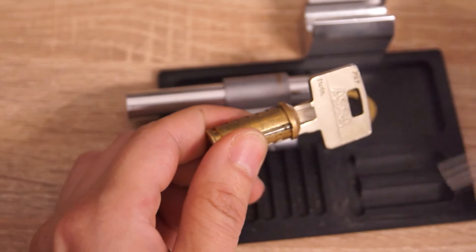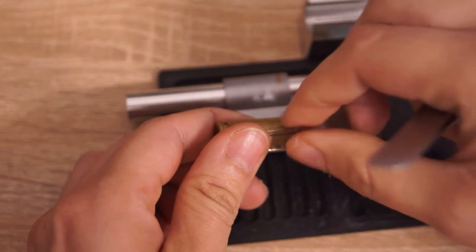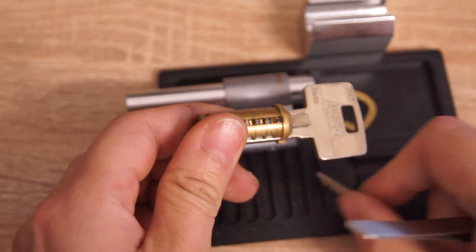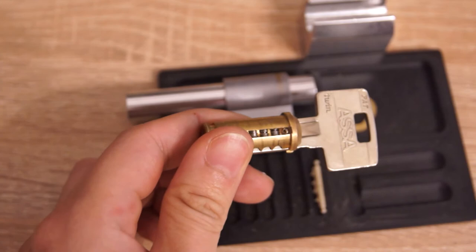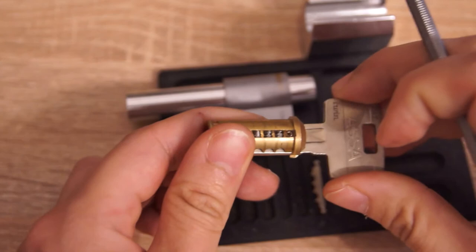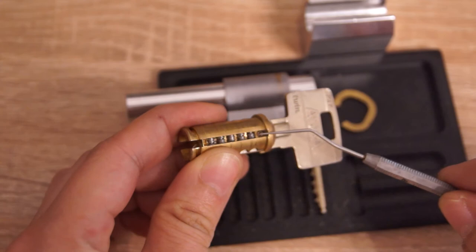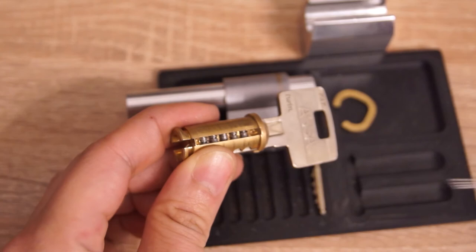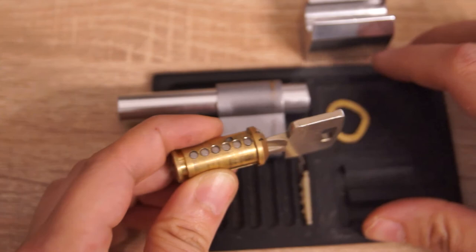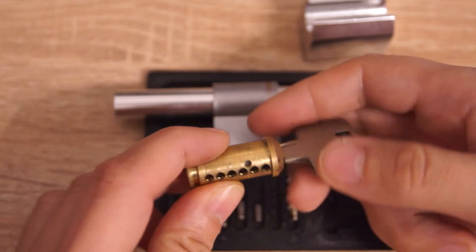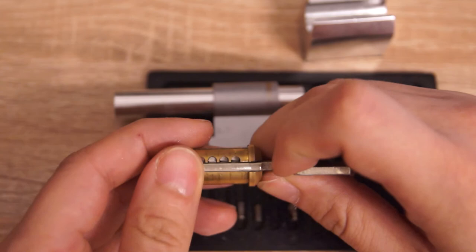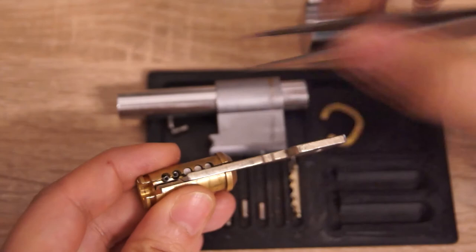First of all, I will remove the sidebar. We will give you a close-up later. Then, those tiny sidebar springs. Then, I will drop those key pins. Then, I will get those five side pins out.